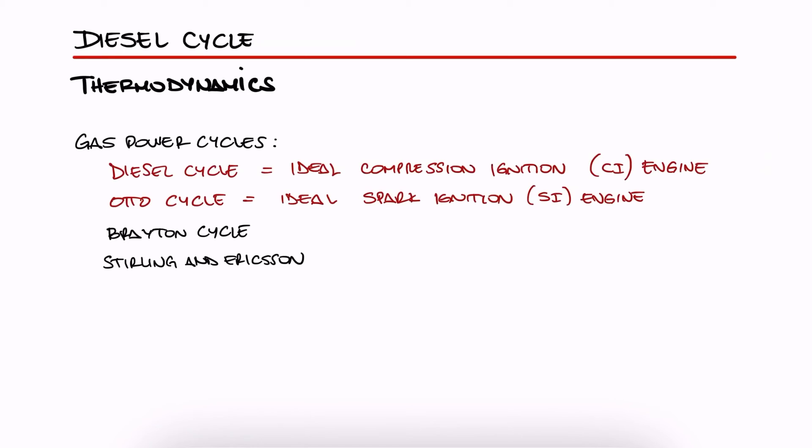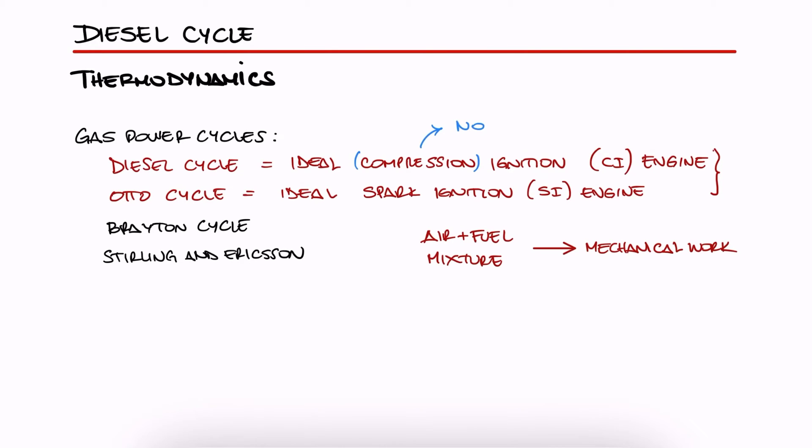Just like the auto cycle, the diesel cycle takes the energy of combusting a fuel and air mixture to produce mechanical work. The main difference is that in a diesel cycle we don't have a spark that initiates the combustion. Diesel cycles are the ideal cycle for a compression ignition engine, just like auto cycles are the ideal cycle for a spark ignition engine.